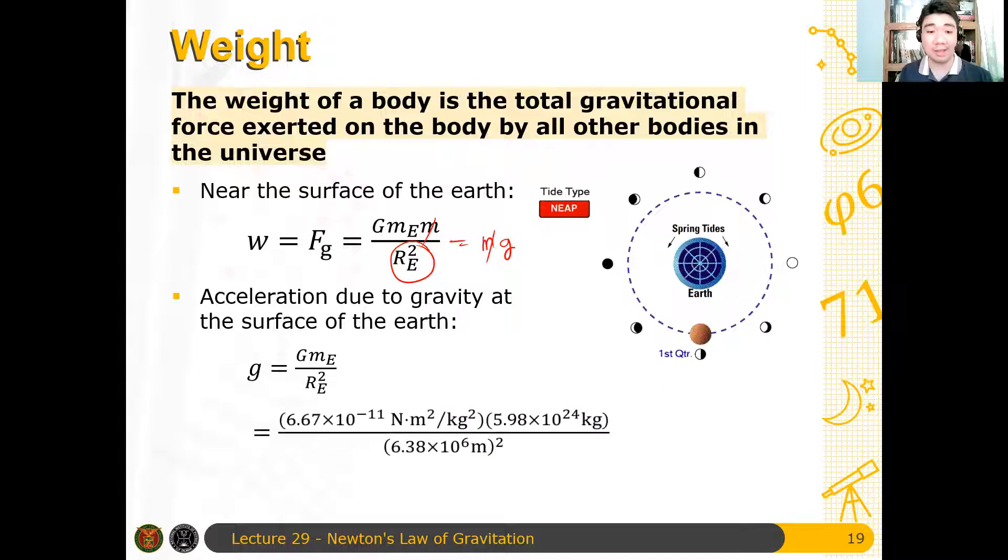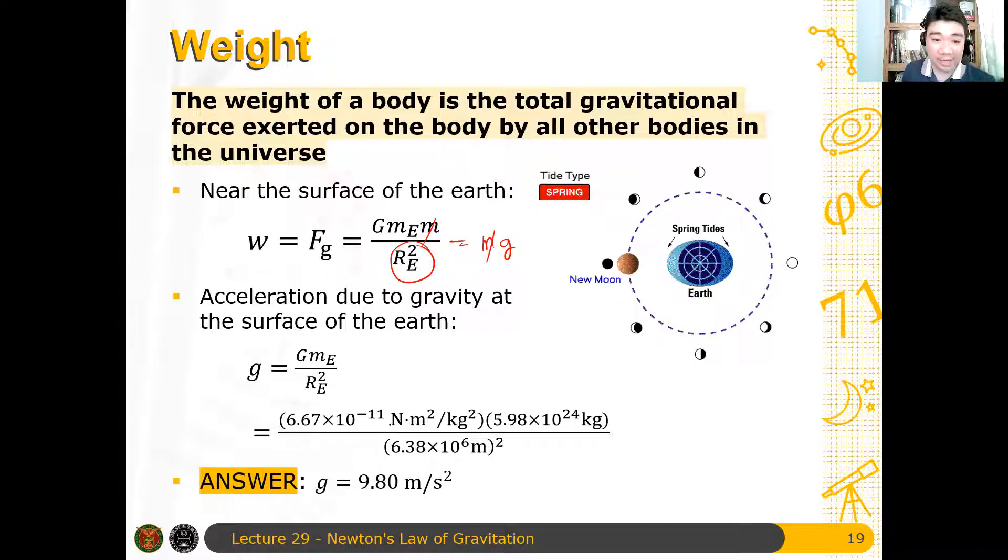If you plug in the numbers, since the mass of the Earth is about 5.98 times 10 to the 24 kilograms, and the radius of the Earth is about 6.38 or 6,380 kilometers, we get an expression that looks like this. g is 9.81 meters per second squared. Doon nang galing yung 9.81 alam natin.